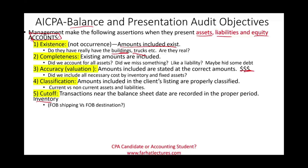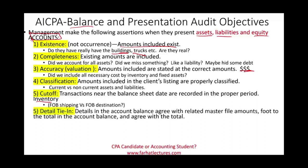Based on observation, you'd be surprised how many questions about FOB shipping and FOB destination appear in the MCQs as well as in simulations that the AICPA tests you on. Detailed tie-in is basically the same thing as summarization and posting: the details in account balances agree with the related file amount, or foot to the total in the account balances and agree with the total. Did we add up the total correctly? Then post to the appropriate general ledger or master file.